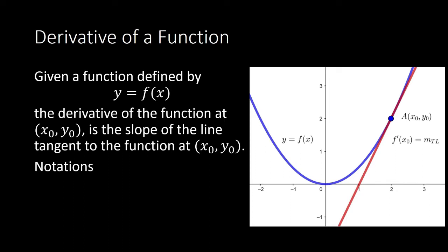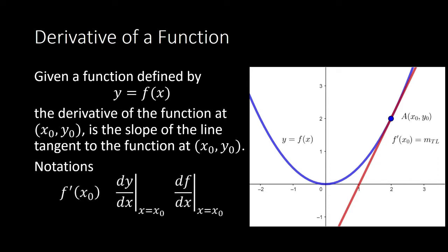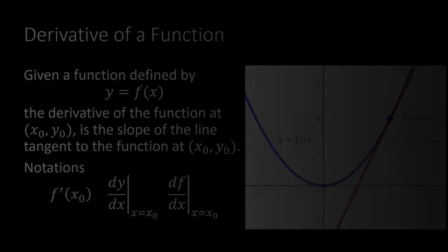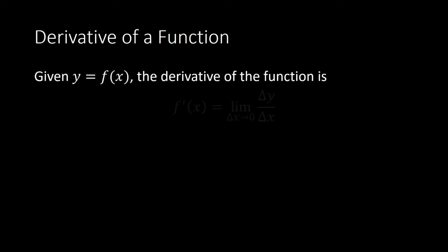The notations we use to express the derivative are: f prime of x sub 0, dy over dx evaluated when x equals x sub 0, and df over dx evaluated when x equals x sub 0. This is where we ended in our last video about the derivative of a function given y equals f of x.